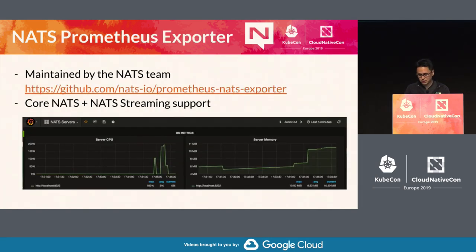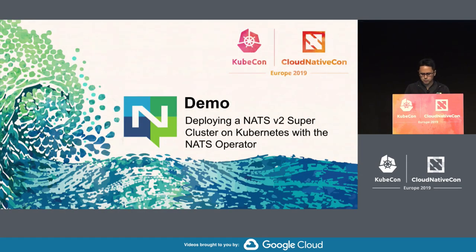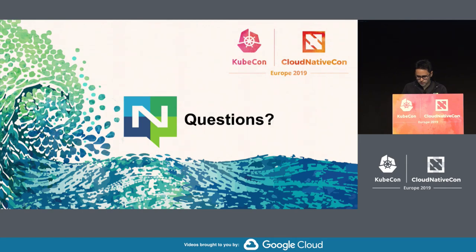The NATS Prometheus exporter supports both NATS and NATS Streaming. I'll give you a quick demo of deploying a NATS V2 cluster on Kubernetes, and since I'm running short on time, I'll move to questions as well.